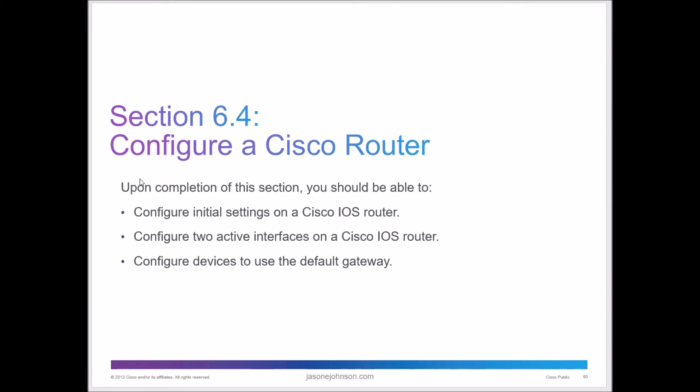Let's look at section 6-4: configuring a Cisco router. At the end of this section you should be able to configure the initial settings on a Cisco IOS router, configure two active interfaces on a Cisco IOS router, and configure devices to use a default gateway. This video is an overview of the material — you'll do the hands-on labs in your Netacad course using Packet Tracer or real equipment.